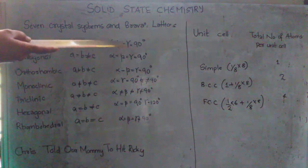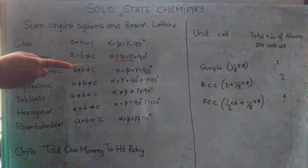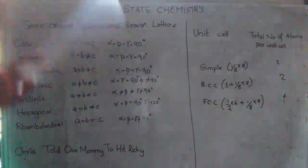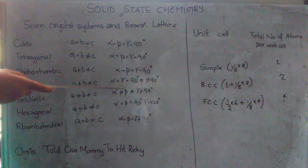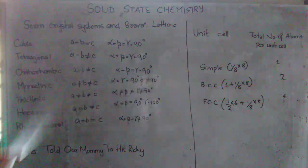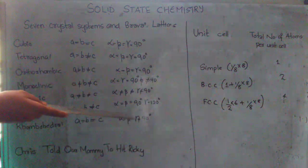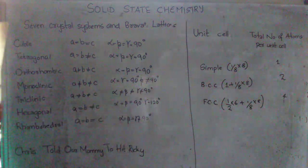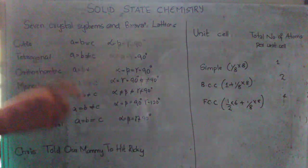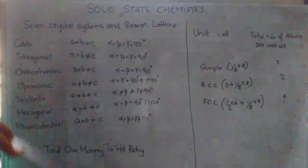Then the next part will be the angle to be memorized. Once you memorize these two, the first three angles all will be equal to 90 degree. Then the fourth one, alpha and gamma will be 90 degree but beta will not be equal to 90 degree. The next one, none of them will be 90 degree. Then again two of them will become 90 degree. Finally, all will be equal but none of them will be 90 degree. So this is the 7 crystal systems, Bravais lattices and also the shortcut to remember this.